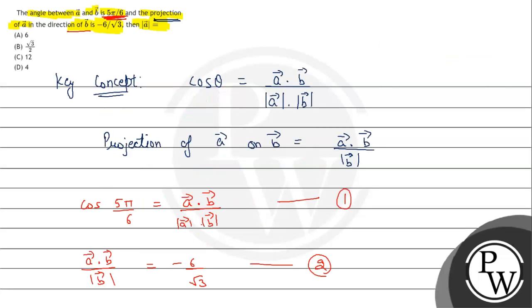Options ka saath match karte hain — correct option is D, magnitude of A vector is equal to 4. So this is our final answer. I hope you all understand it well. Best of luck.